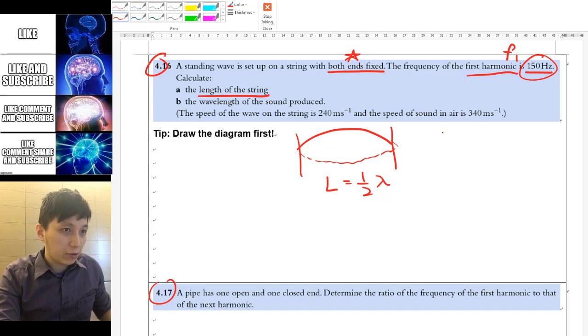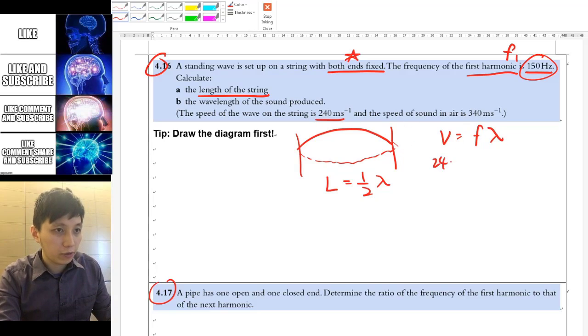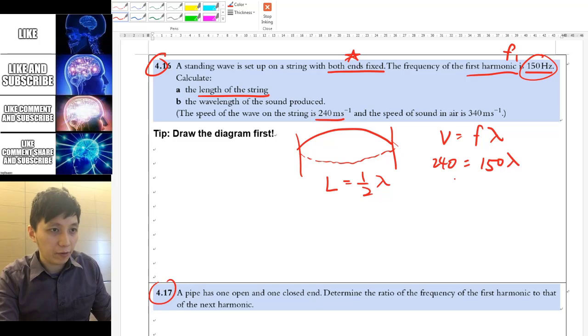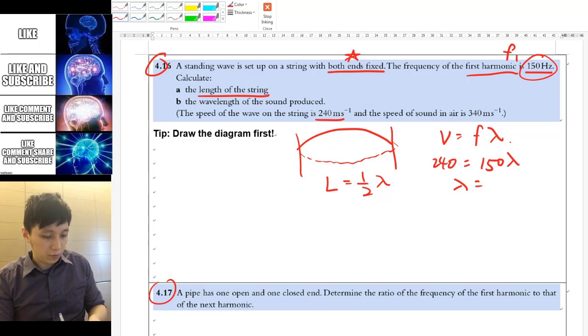Now we can use the wave equation V equals F lambda to solve. We have the V from the question, which is 240 for the string, speed of wave in the string. Frequency is 150 Hz.